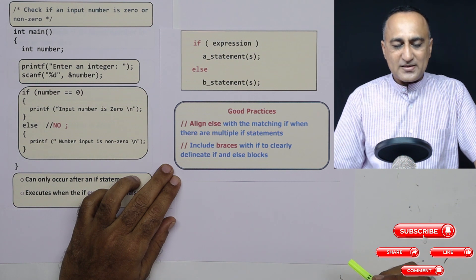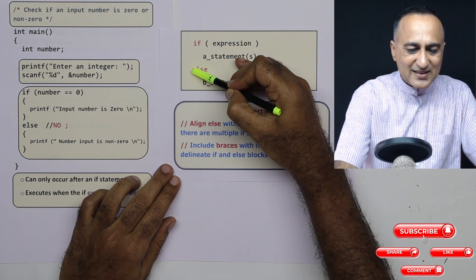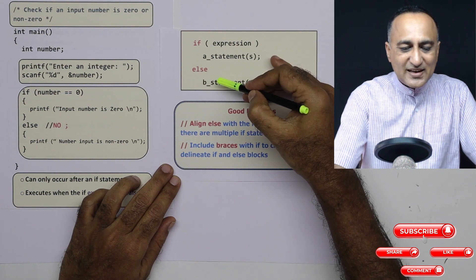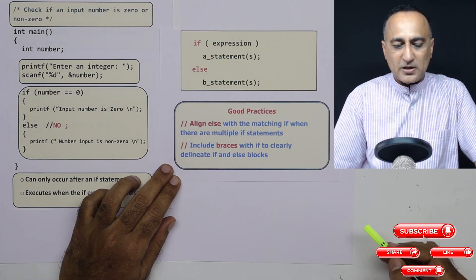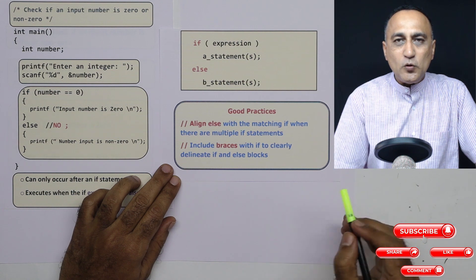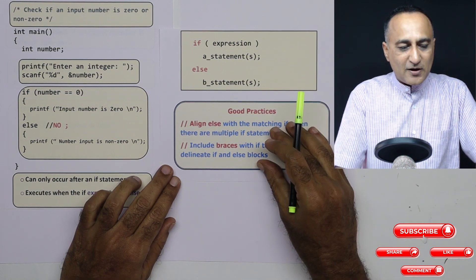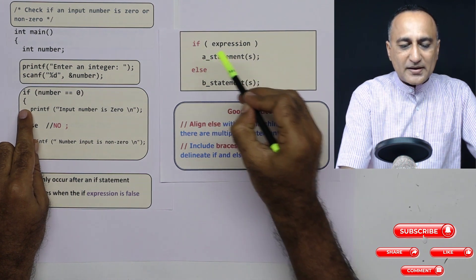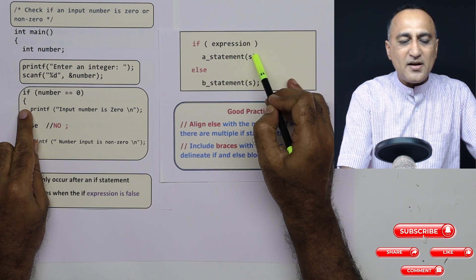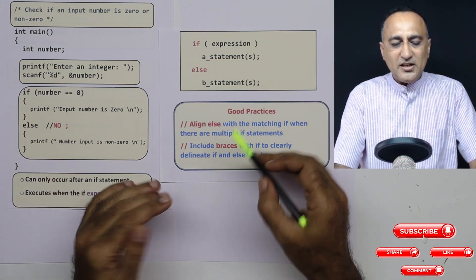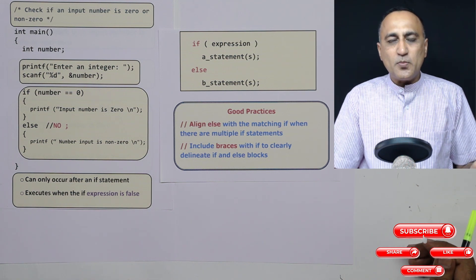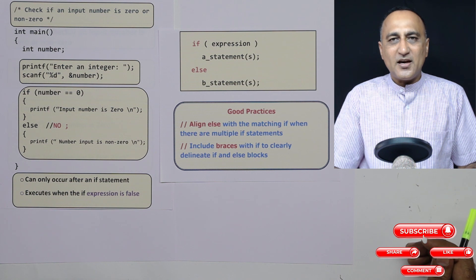What are some of the good practices? Some of the good practices are that the if and else should align with each other if there are more if-else statements, so you can easily relate which expression is being associated with which statement. Now even if there is a single statement, you don't need to include the flower bracket. But it is a good practice to include flower brackets, so you know which statements are associated with if and are executed as a result of if being true. So always include the flower braces, even if there is a single statement, so that there is no confusion as to which group of statements the if or else is executing or is associated with.